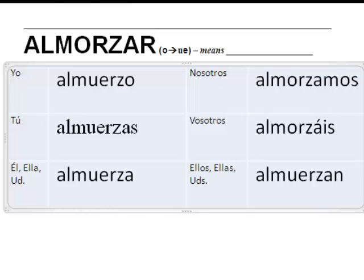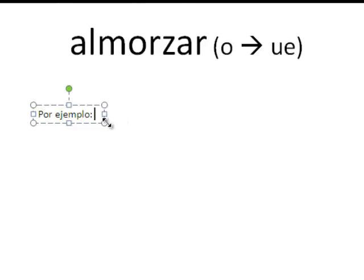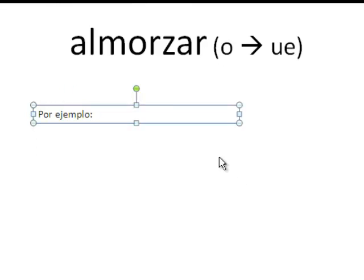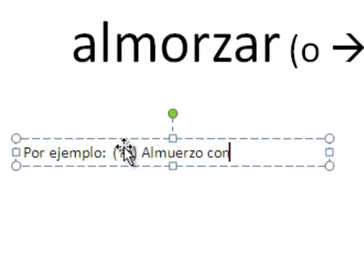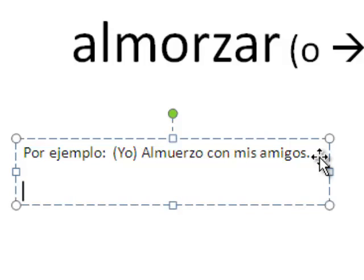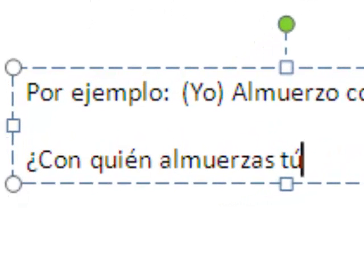Let's do some practice with almorzar. ¿Cómo se dice 'I eat lunch with my friends'? Yo almuerzo con mis amigos. How would you ask somebody, 'With whom do you eat lunch?' ¿Con quién almuerzas tú? If you're doing accents, alt 163 is the safest bet there.